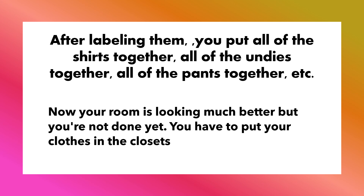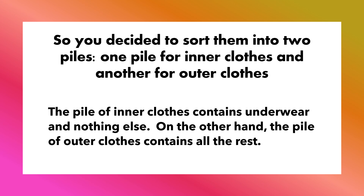After labeling them, you put all of the shirts together, all of the undies together, all of the pants together, etc. Now your room is looking much better, but you're not done yet. You have to put your clothes in the closets. So you decided to sort them into two piles — one pile for inner clothes and one for outer clothes. The pile of inner clothes contains underwear and nothing else; the pile of outer clothes contains all the rest.